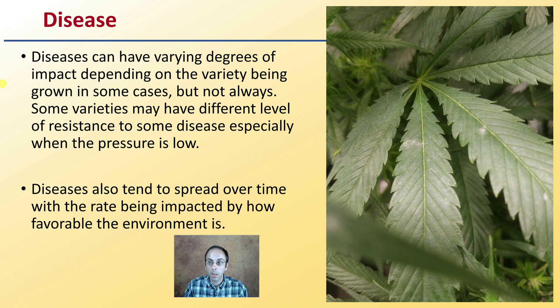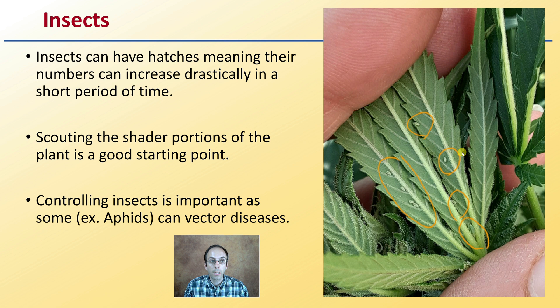Then there's also insects. Here we see some aphids on the underside of a cannabis leaf. Insects can have hatches, meaning their numbers can increase drastically in a very short period of time. Scouting the shadier portions of the plant is a good starting point. Controlling insects is important as some, particularly aphids pictured here, can vector diseases and viruses as well.